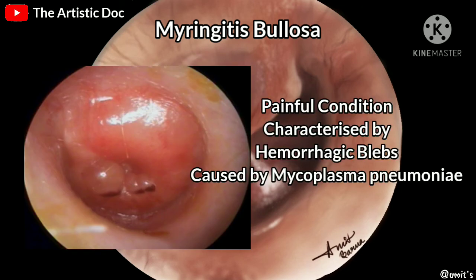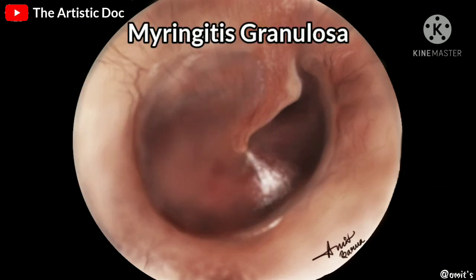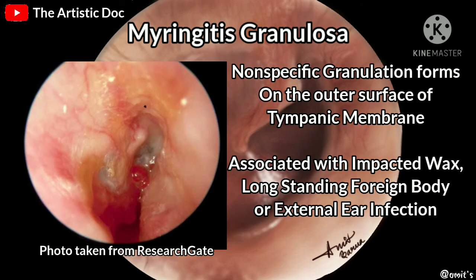Myringitis bullosa is a painful condition in which hemorrhagic blebs can be seen on the tympanic membrane. It is probably caused by Mycoplasma pneumoniae. Herpes zoster oticus forms due to infection involving the geniculate ganglion of the facial nerve; vesicles are seen on the tympanic membrane, the pinna, concha, and retroauricular sulcus. Myringitis granulosa: granulations form on the outer surface of the tympanic membrane and may be associated with impacted wax, a long-standing foreign body, or external ear infection.